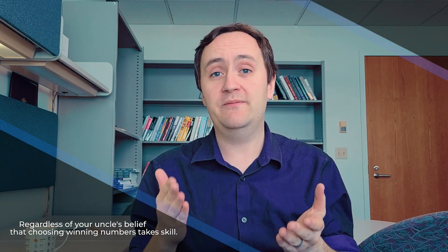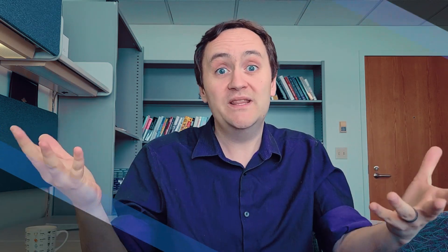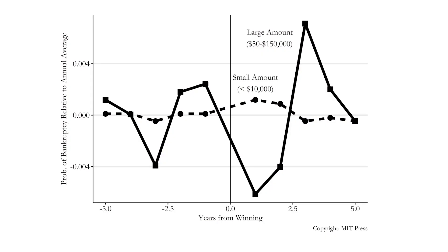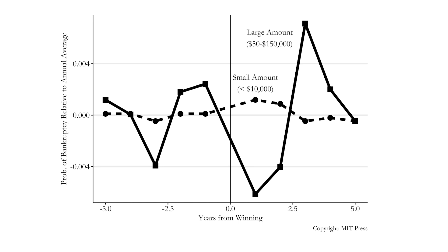If you just looked at winning the lottery versus not winning, that wouldn't work because people choose to play, creating a backdoor. But once you know someone has already chosen to buy lottery tickets, winning or not within that group is a good source of random variation. As we can see in this graph, they found that immediately after winning a big amount, your chances of going bankrupt go down considerably. However, a couple of years later the chances go way up and it cancels out — no big net effect on bankruptcy, just a shift in timing.